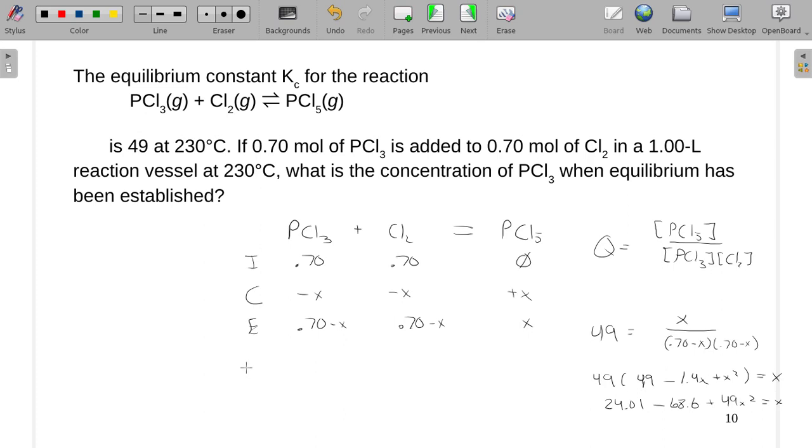So my full polynomial, and I'm going to actually rewrite it so it's going left to right, is 49X squared minus 69.6X. I dropped my X when I put that there. That's because moving this over takes the 68 to a 69. And then positive 24.01. That's my A term, my B term, and my C term. And we will plug that into the quadratic formula to get our X.